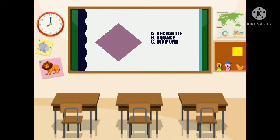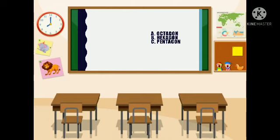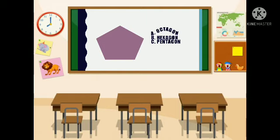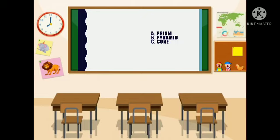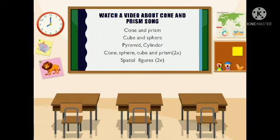How about this shape? Letter A rectangle, B square, or C diamond? The correct answer is diamond, letter C. How about this shape? Letter A circle, B oval, or C sphere? Correct! It's letter A, circle. How about this shape? A octagon, B hexagon, or C pentagon? The correct answer is letter C, pentagon. How about this shape? A prism, B pyramid, or C cone? The correct answer is letter B, pyramid.